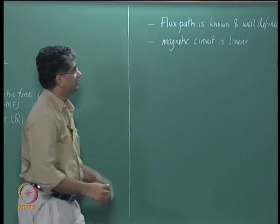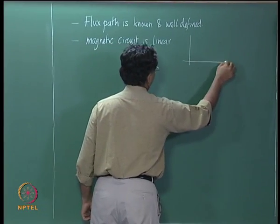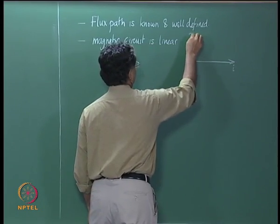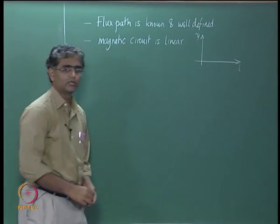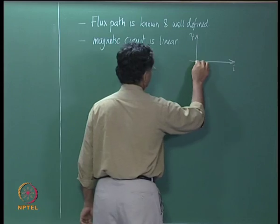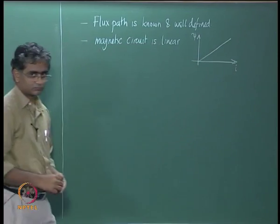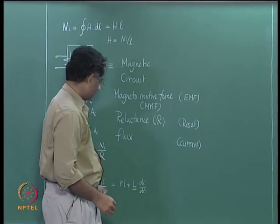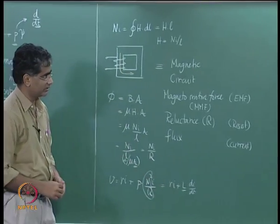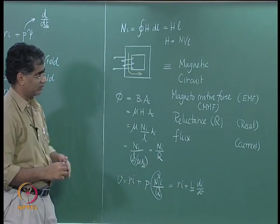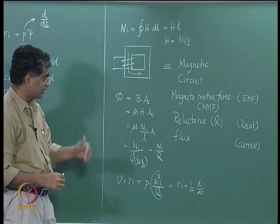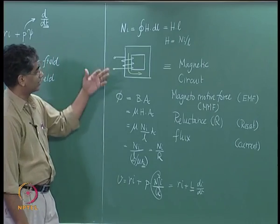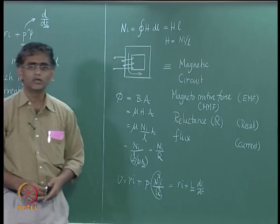The second assumption is that the magnetic circuit is linear — meaning that if you plot current I versus flux linkage, the relationship is a straight line. In other words, reluctance R is fixed — it is just a number that does not change with respect to time or with respect to I. With these two assumptions, we can define an inductance for the circuit and write the equation as RI + L·dI/dt.